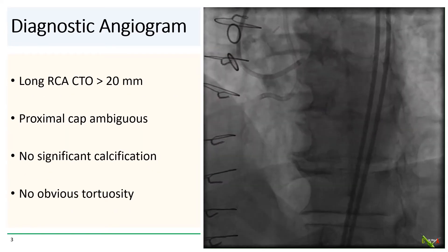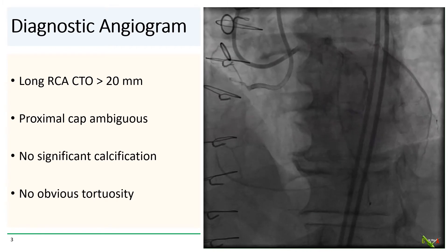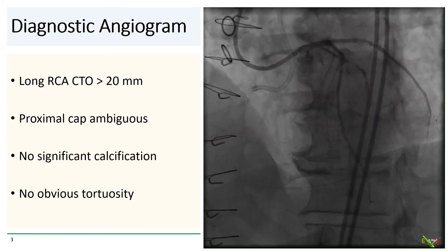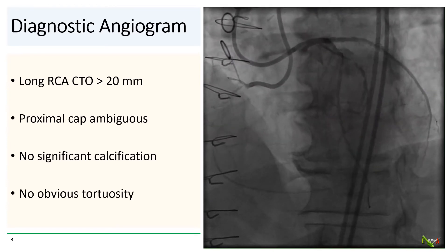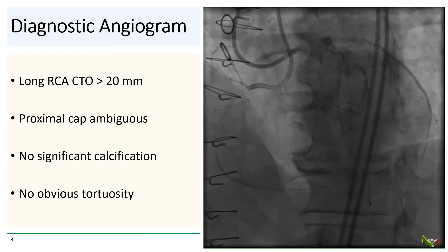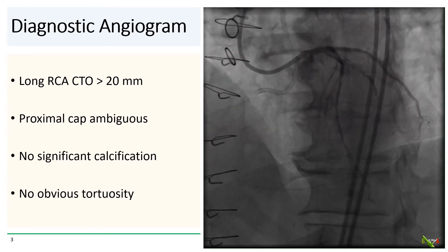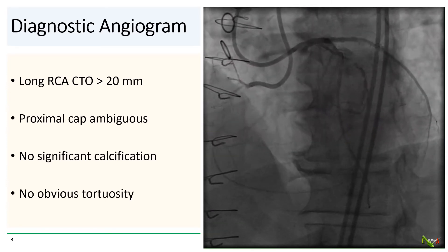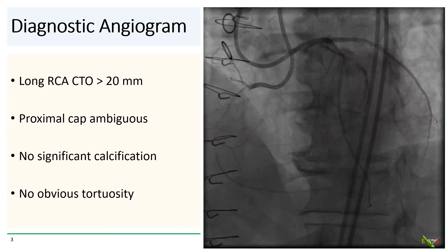As with most CTO interventions, we did simultaneous injections in both the antegrade direction via the RCA and in the retrograde direction via the left main. We see a severely diseased RCA system with a relatively long CTO. The location of the proximal cap is a bit ambiguous. There was no significant calcification in the RCA and no obvious angulation or tortuosity, although you can't be sure about the actual path of the occluded segment without a CT, which was not done here. Sometimes getting a coronary CT before CTO PCI is useful for this reason.